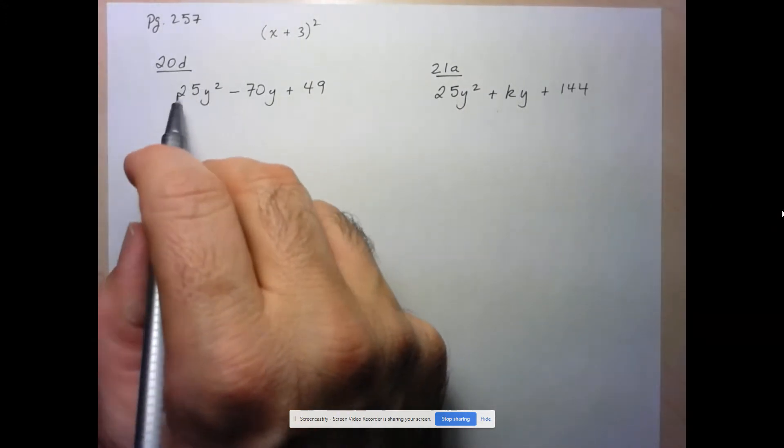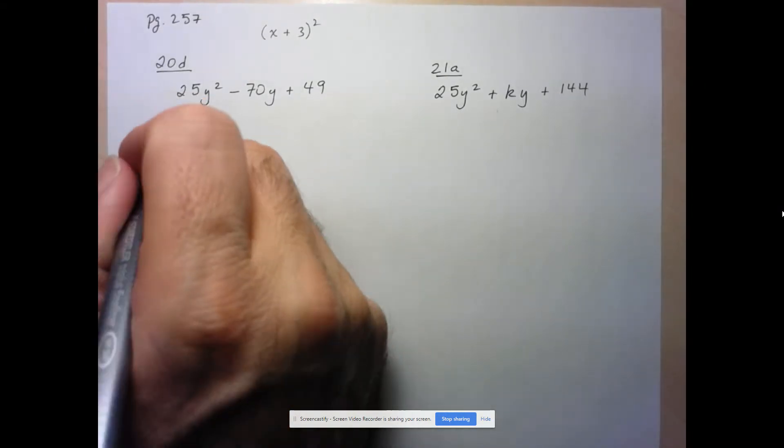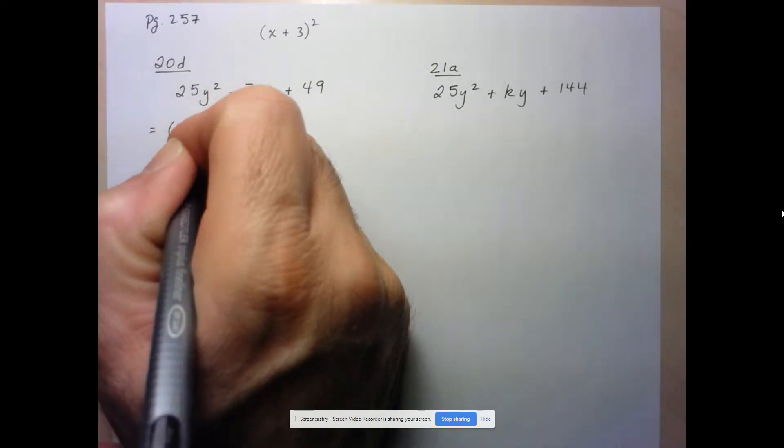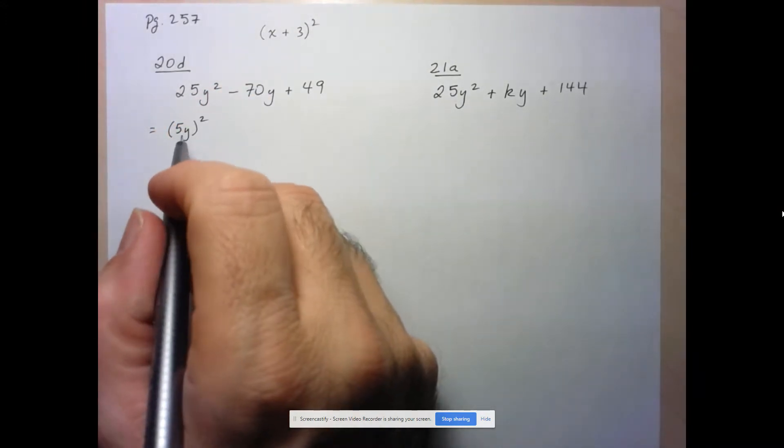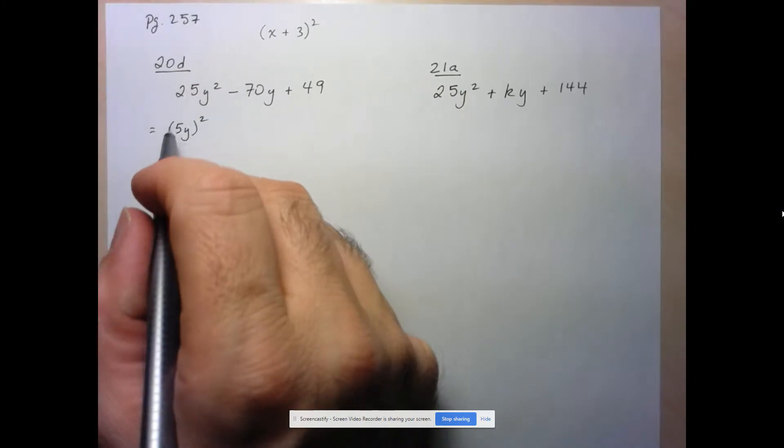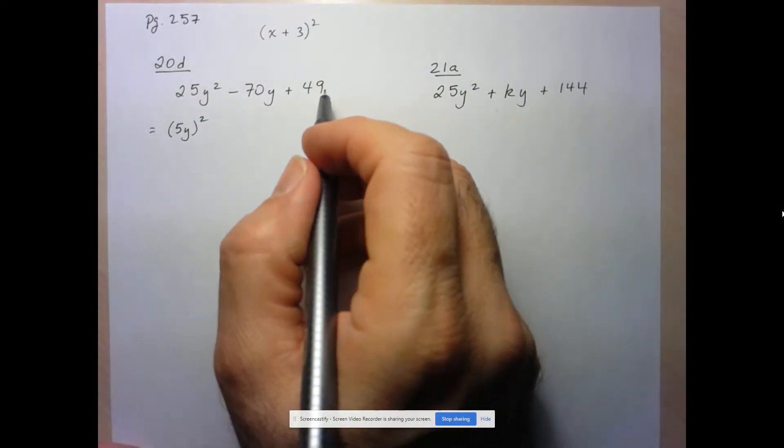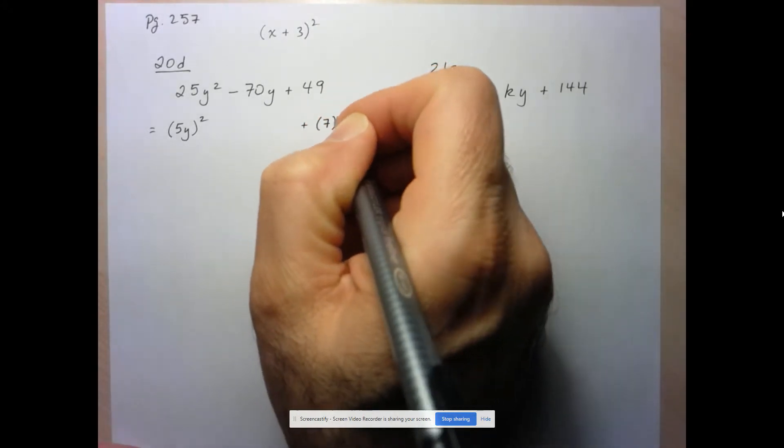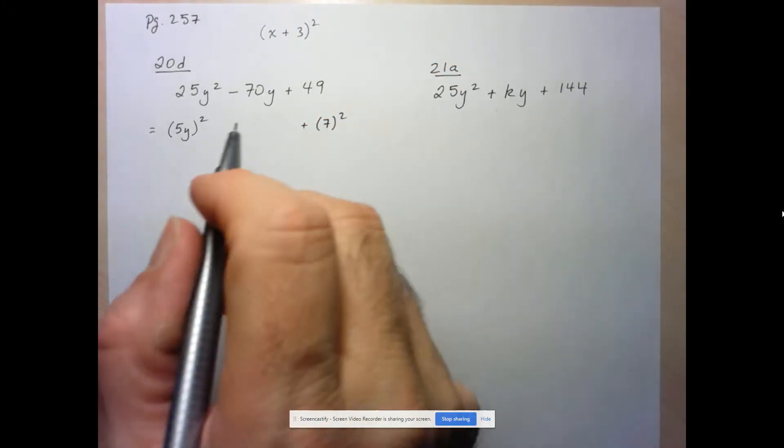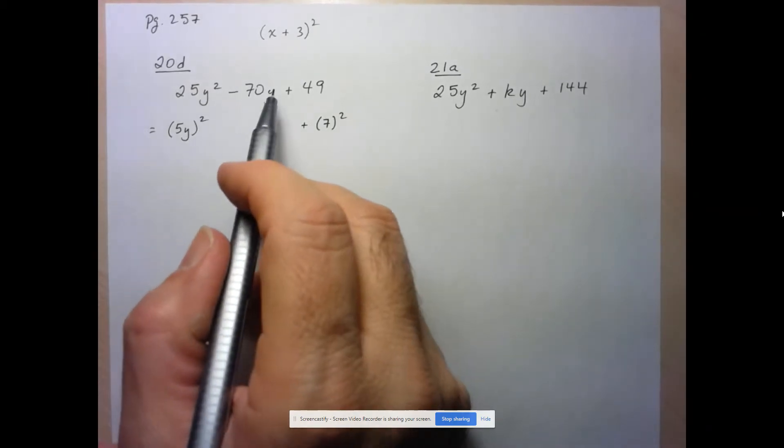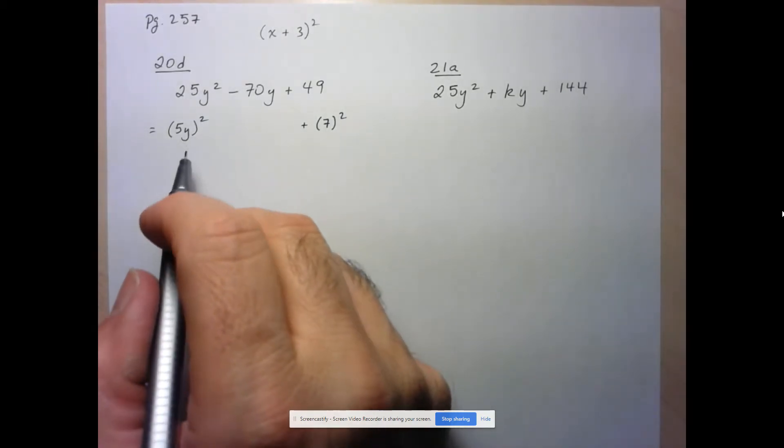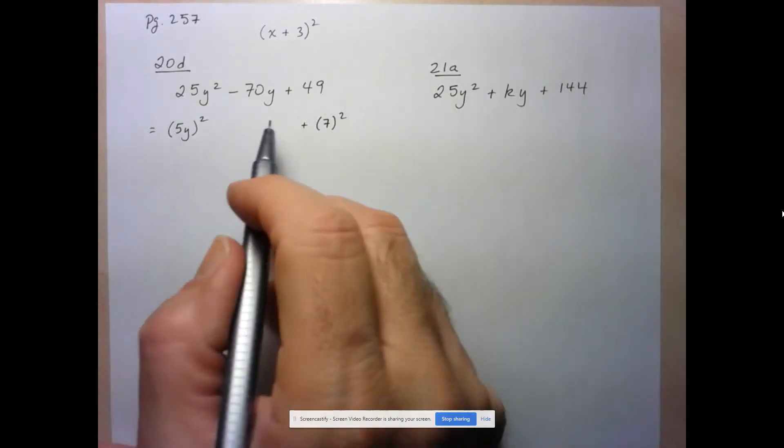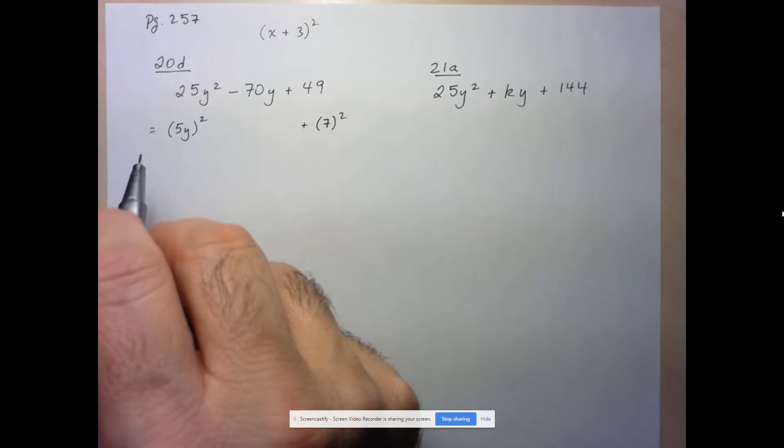So I notice here that that first expression is a perfect square. This can be written as 5y all squared. So this must represent the first term. So I'm squaring the first. At the end, I have a perfect square. So this can be written as 7 squared, so twice the last. So if this is going to be a perfect square trinomial, this middle term should be equal to the product of twice the first and last. And let's see what happens here.